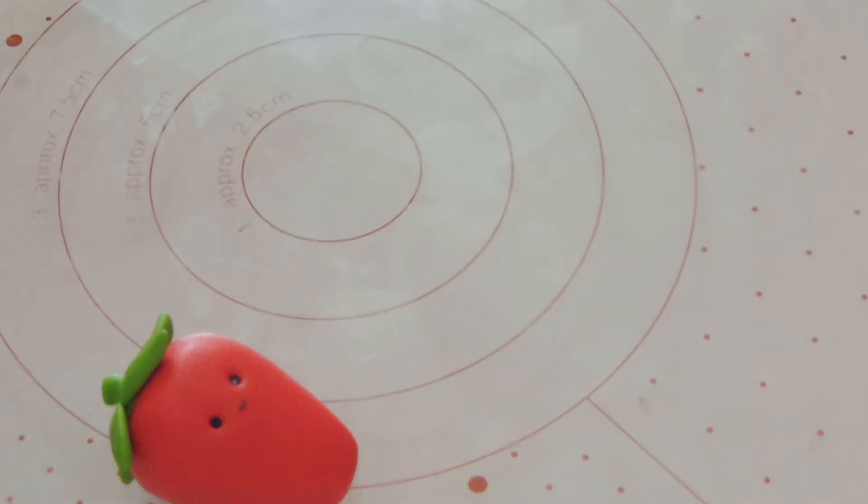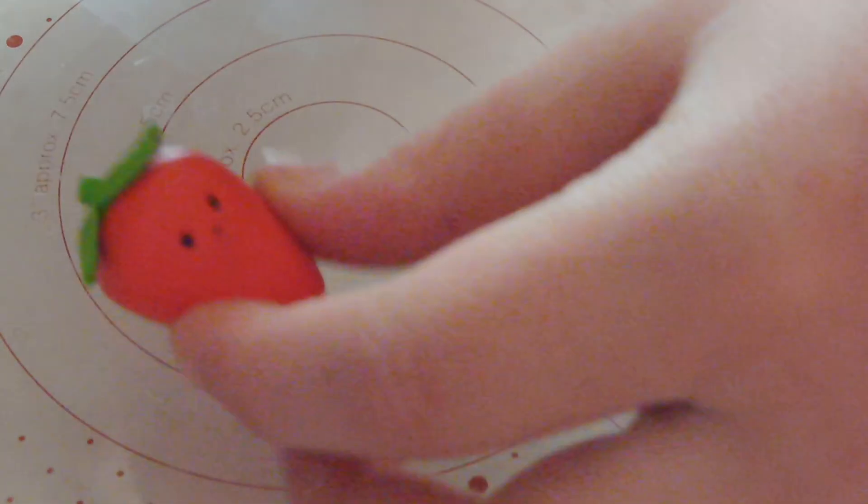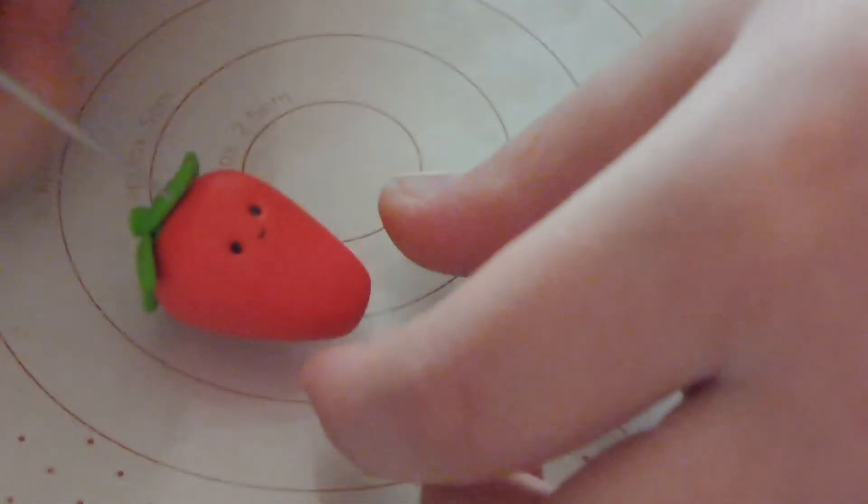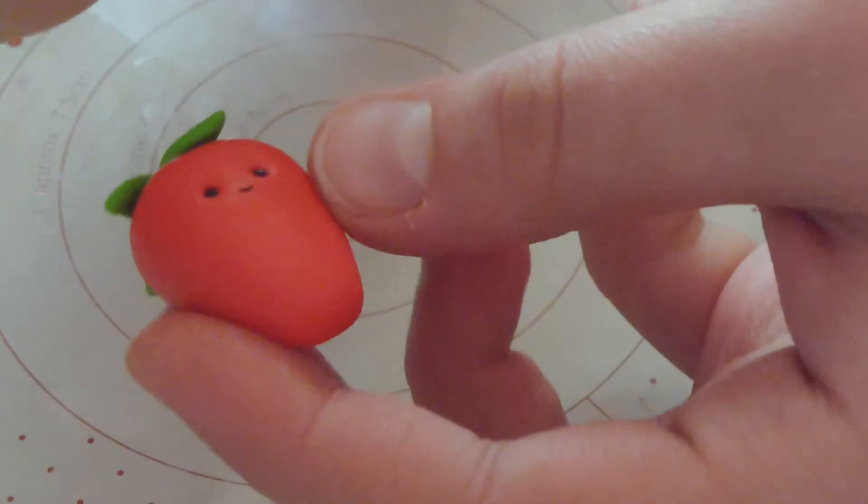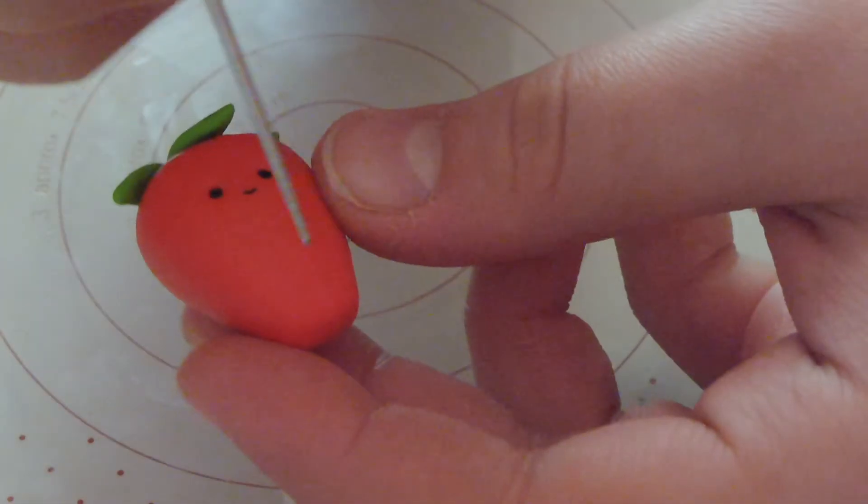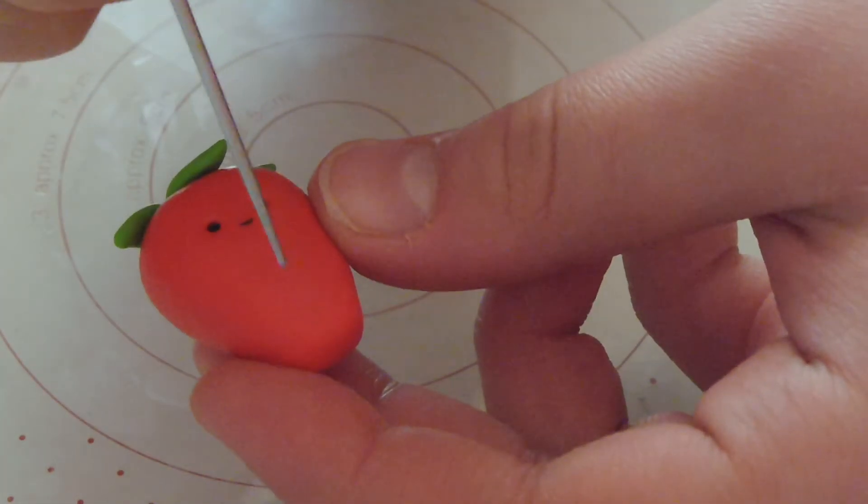So our little kawaii strawberry is basically ready. I've decided at this point though to also add a little bit of texture. Now you can not do this if you want, it's optional. So using my needle tool, I'm just going to create small little scratches along the surface which will serve as little seeds. And I just think it makes it look really cute.